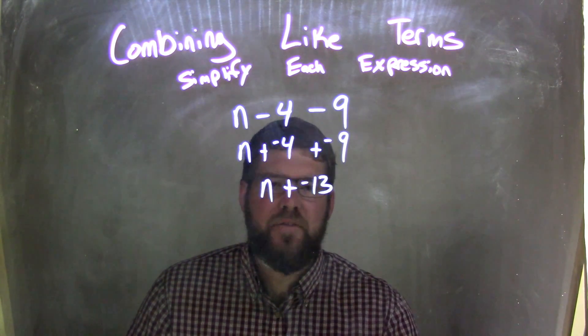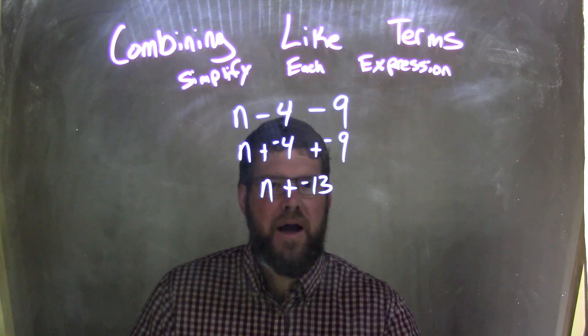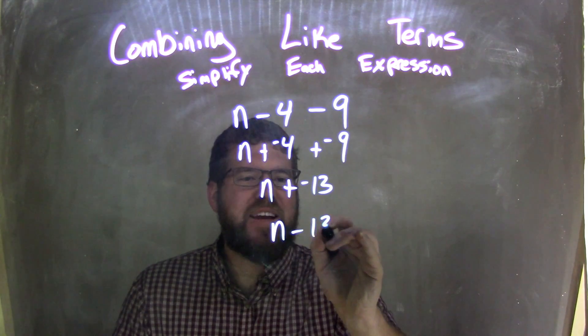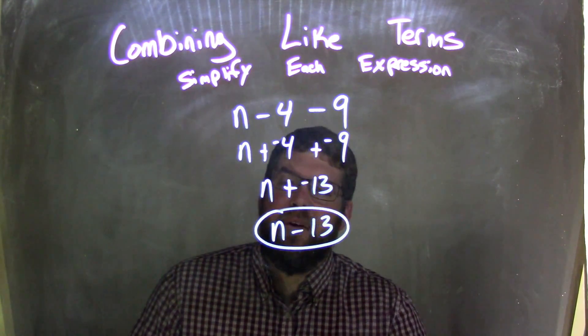So now we have n plus a negative 13. And we know that adding a negative is the same thing as subtraction, right? Kind of reverse that up there. So we have n minus 13 and that looks cleaner. So that's why we're going to keep that there. And that's the final answer.